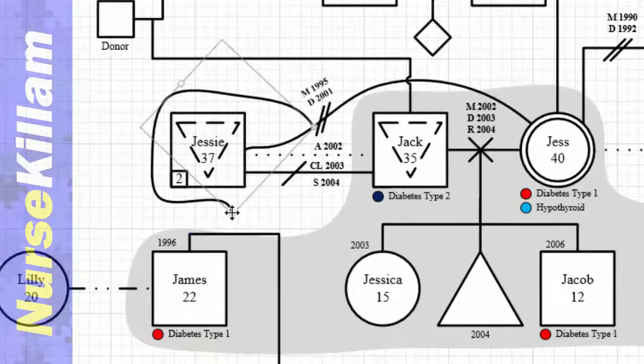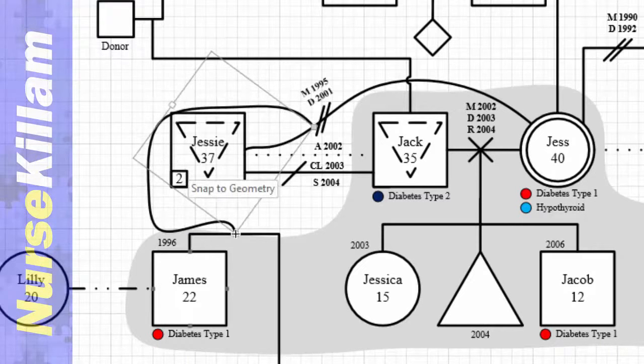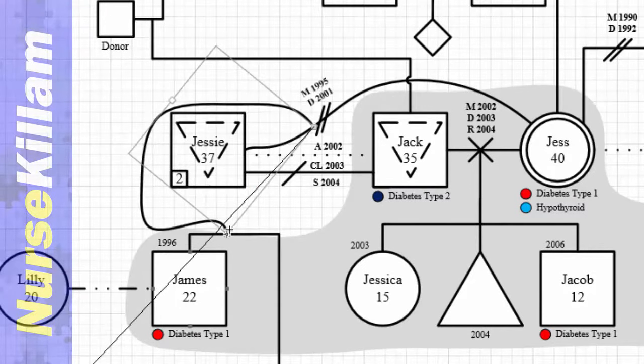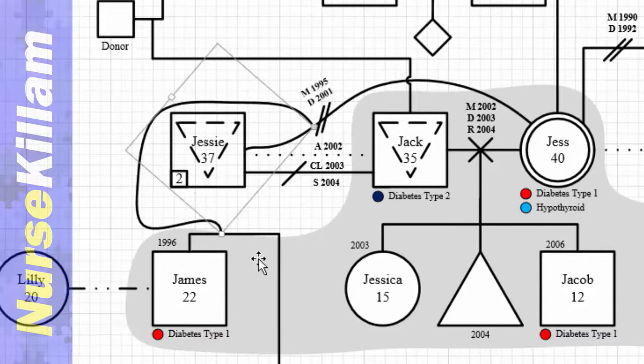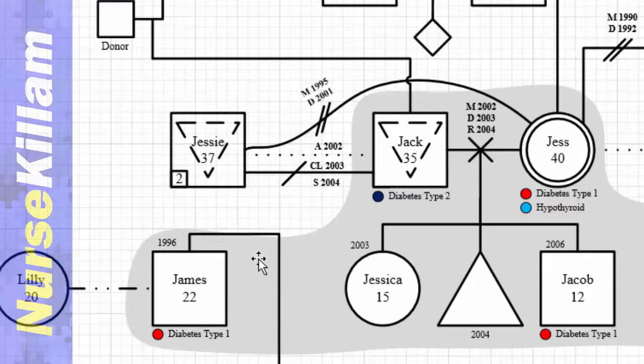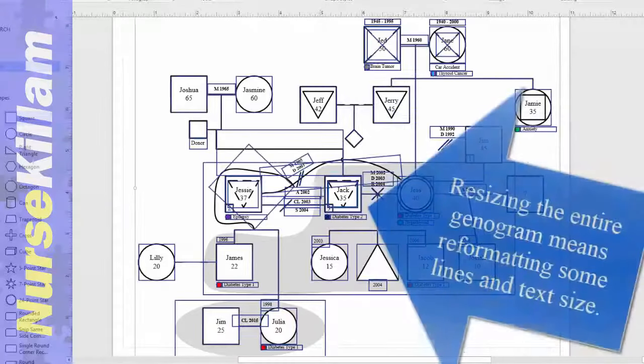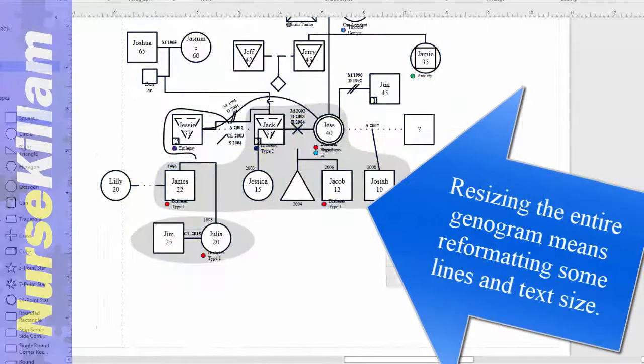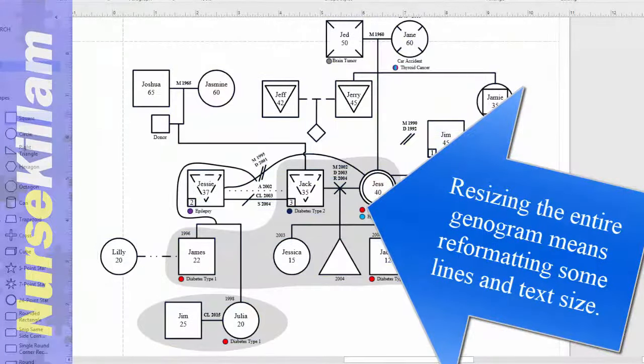As you can see, if I needed to move this line, really I should redraw it because of the type of line that it is. If I had written the extra assessment information under Jessie before drawing the line, I wouldn't need to delete this line and start over. It is much easier to move around an entire genogram than it is to move one shape around.